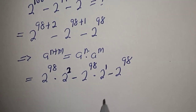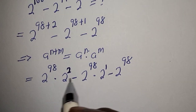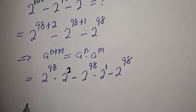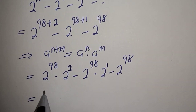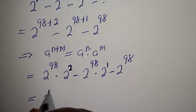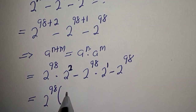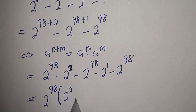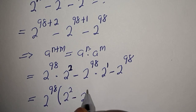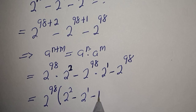Then from here, 2 raised to the power 98 is common — let's bring it out. Here is 2 raised to the power 98 bracket 2 squared minus 2 raised to the power 1 minus 1.